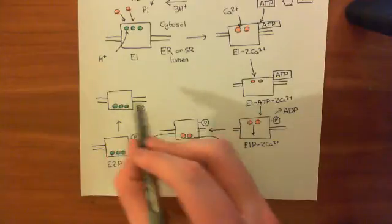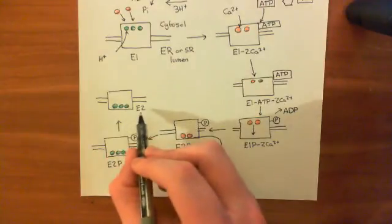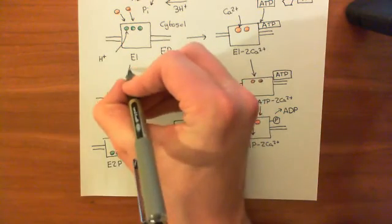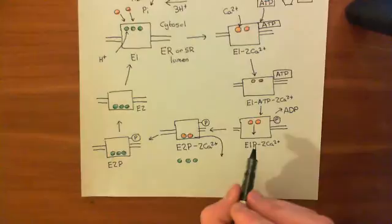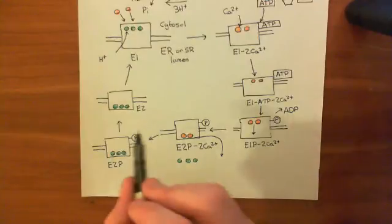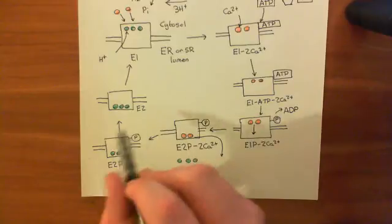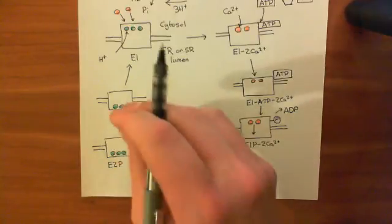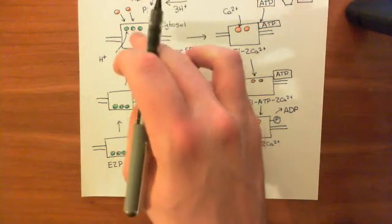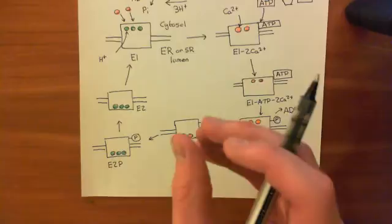Now that the phosphate group has fallen off, it doesn't want to be in the E2 conformation anymore. It's going to return to the E1 conformation because it was the phosphate group that forced it into E2 in the first place. Once the phosphate group on that aspartic residue falls off, it returns to its original conformation and drags those protons back up to face the cytosol.